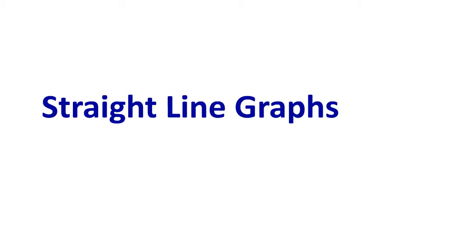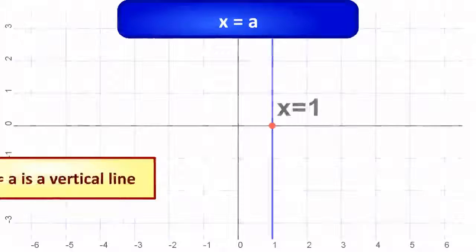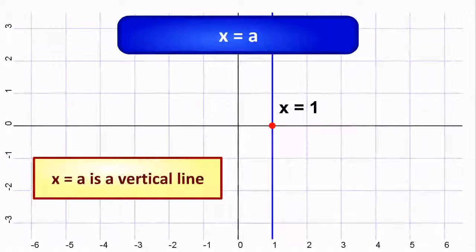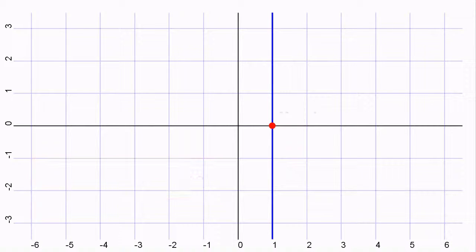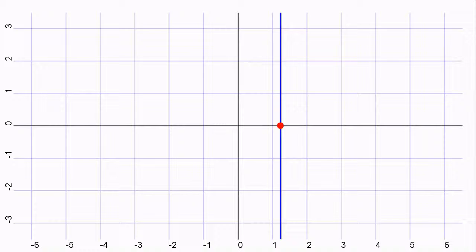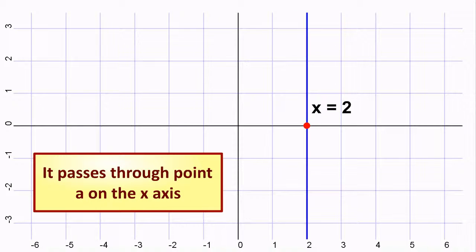Straight Line Graphs. X equals A is a vertical line. It passes through point A on the X axis.